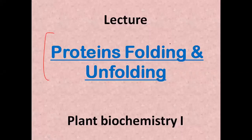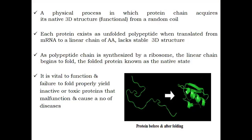In this lecture we will discuss the folding and unfolding of proteins. Protein folding is a physical process in which a protein chain acquires its native three-dimensional structure from a random coil. This three-dimensional structure is the functional form of the protein, also called the tertiary structure, which is formed from various interactions such as hydrogen bonding, ionic bonding, and van der Waals forces.